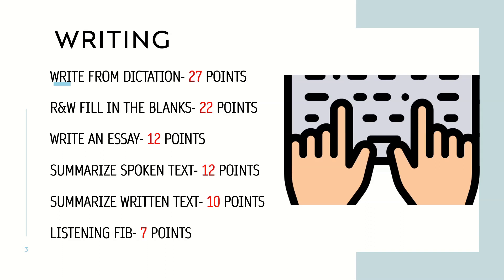Write from dictation contributes 27 points in writing. If you write a word correctly you get one point; if not, you get zero. For example, if a sentence has 10 words and all 10 are correct, you get 10 points. Focus on write from dictation if you are weak in writing.